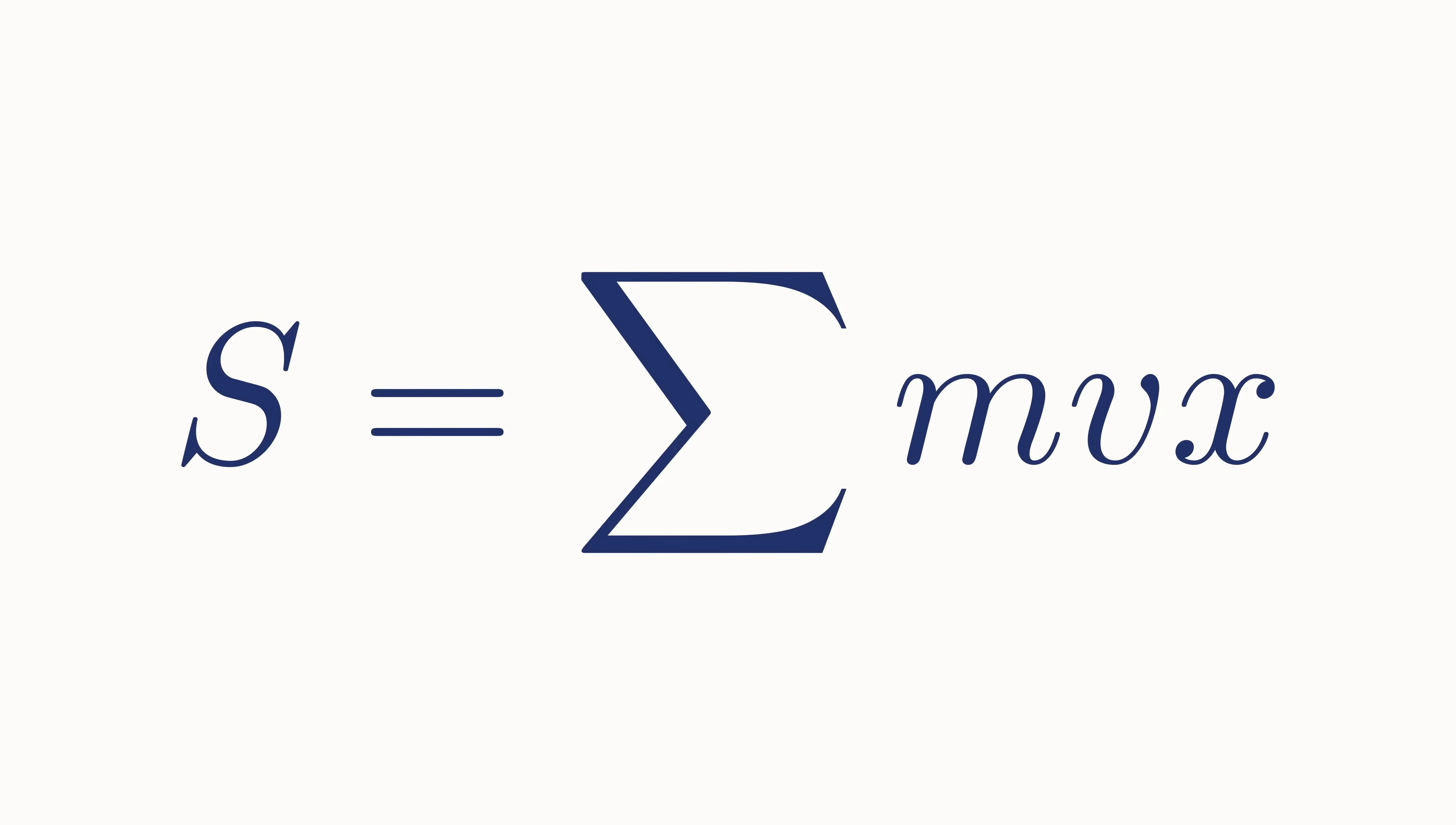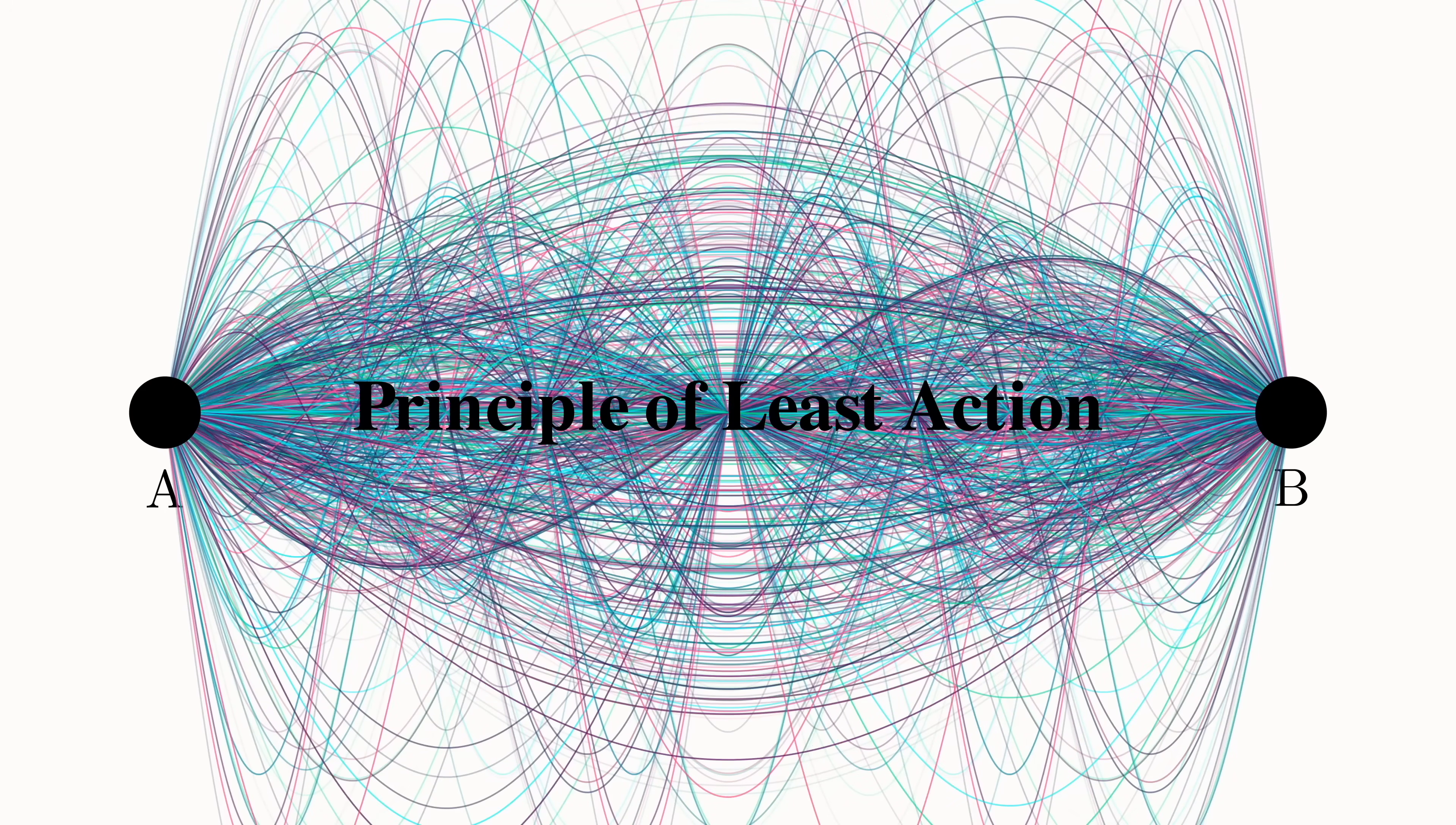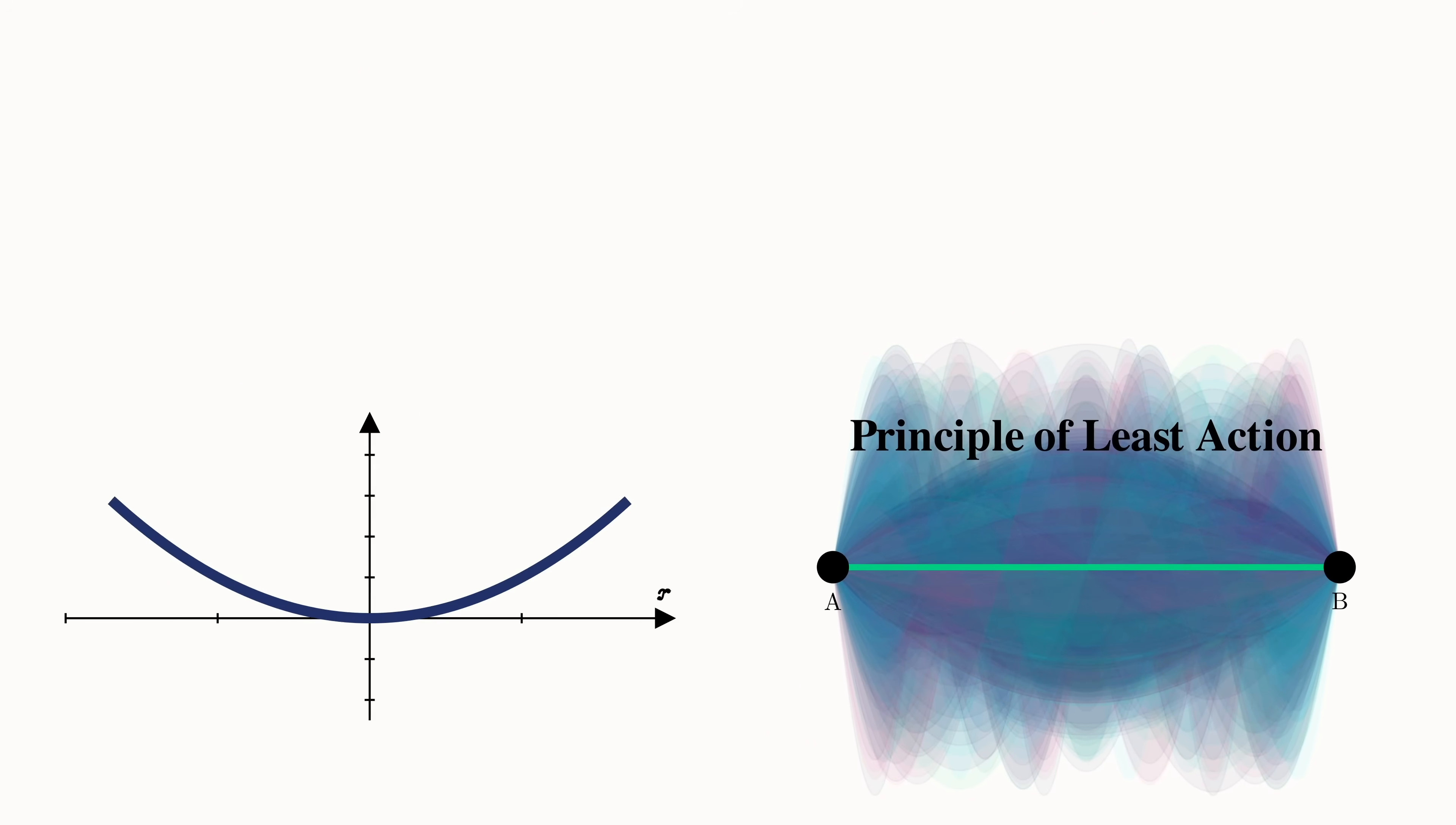And to get the total action, we just need to add up all the parts. Which, in the continuous case, turns into an integral. Maupertuis' brilliant insight was to conjecture that all objects obeyed what he called The Principle of Least Action. Of all possible paths that an object can take, the one that it must always take is the one that minimizes the action. And just as the way to find the minimum of a function is to take its derivative and set it equal to zero, the same approach works for the action. To find the true path, we set the variation of the action to be zero.